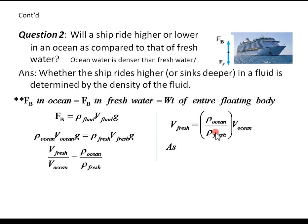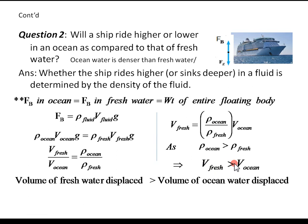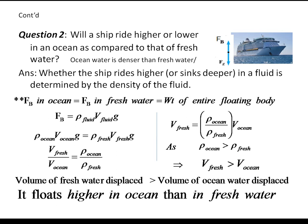Since density of ocean water is greater than density of freshwater, this ratio is greater than 1. Therefore, volume of freshwater displaced will be greater than volume of ocean water displaced. The volume of displaced freshwater is greater than the volume of displaced ocean water, meaning more water is displaced when the ship floats in freshwater, so the ship floats higher in ocean water than in freshwater.